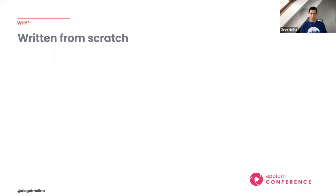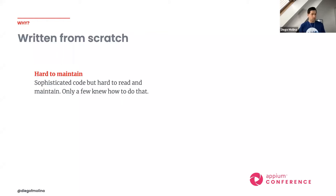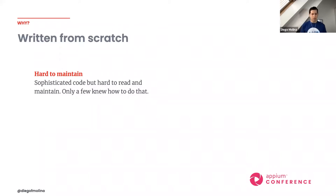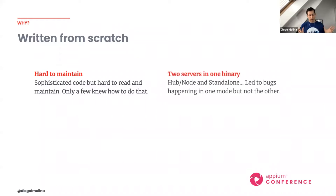The first question many people have asked — and I was also asking myself when we started — is why did we rewrite the grid from scratch? I must confess I was one of the ones saying 'Why do we need to do this? Things are already working.' But Simon was right. He had very good reasons. As a team we agreed it was hard to maintain — it was incredibly sophisticated. The code structure was really smart but really hard to maintain, understand, and read.